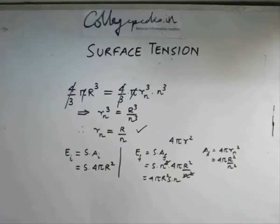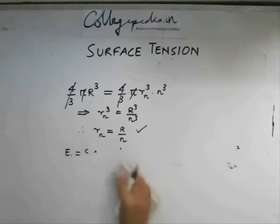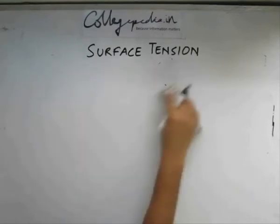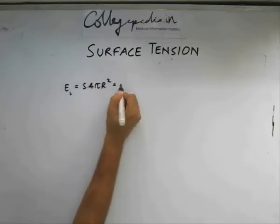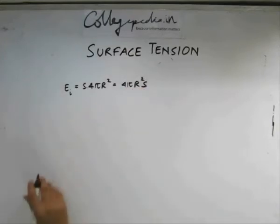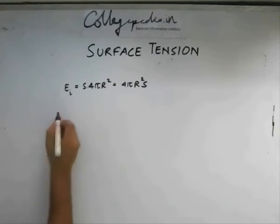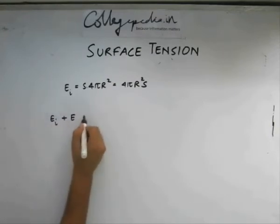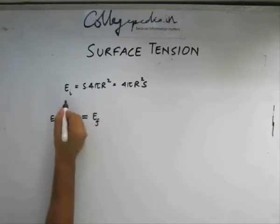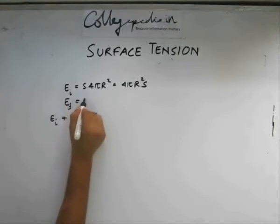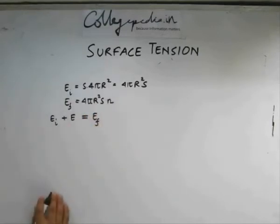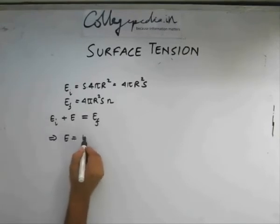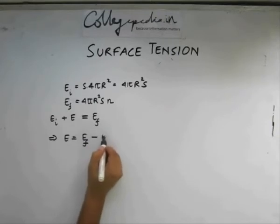So the energy we provided to do this will be the difference of the energy in the final and initial state. We found that our initial energy was s times 4 pi r square or 4 pi r square s. This was our initial energy. We provide some energy to it. So basically it is Ei plus some energy. This will give us the final product. So the final product what we found was 4 pi r square into s into n. Using this, we see that the energy required is basically energy of the final product minus energy of the initial product.